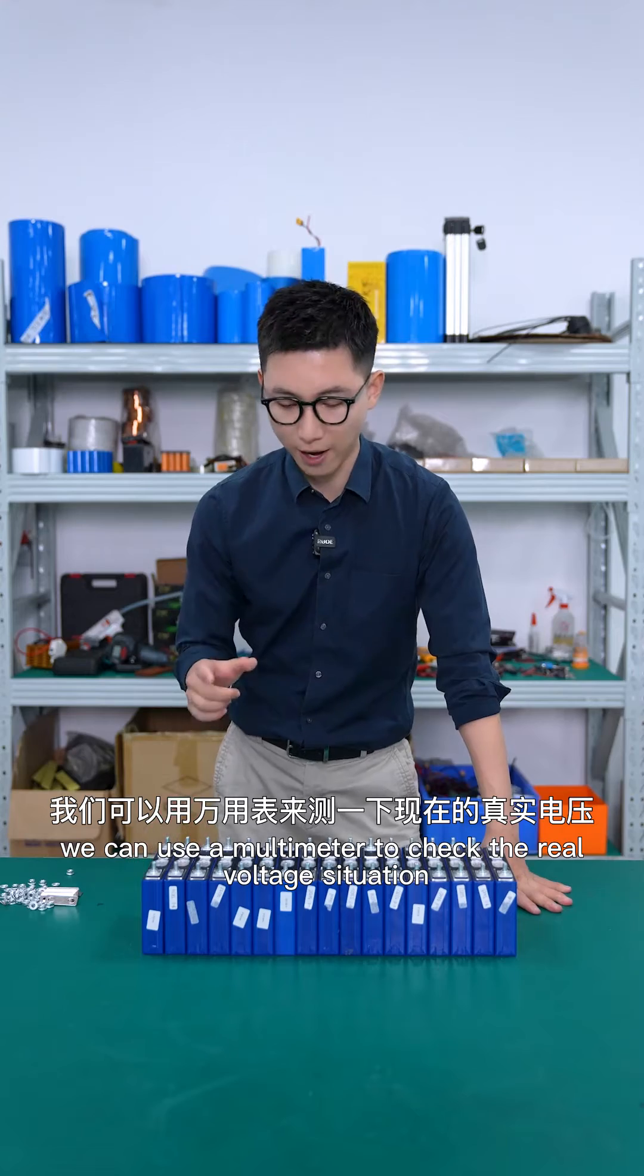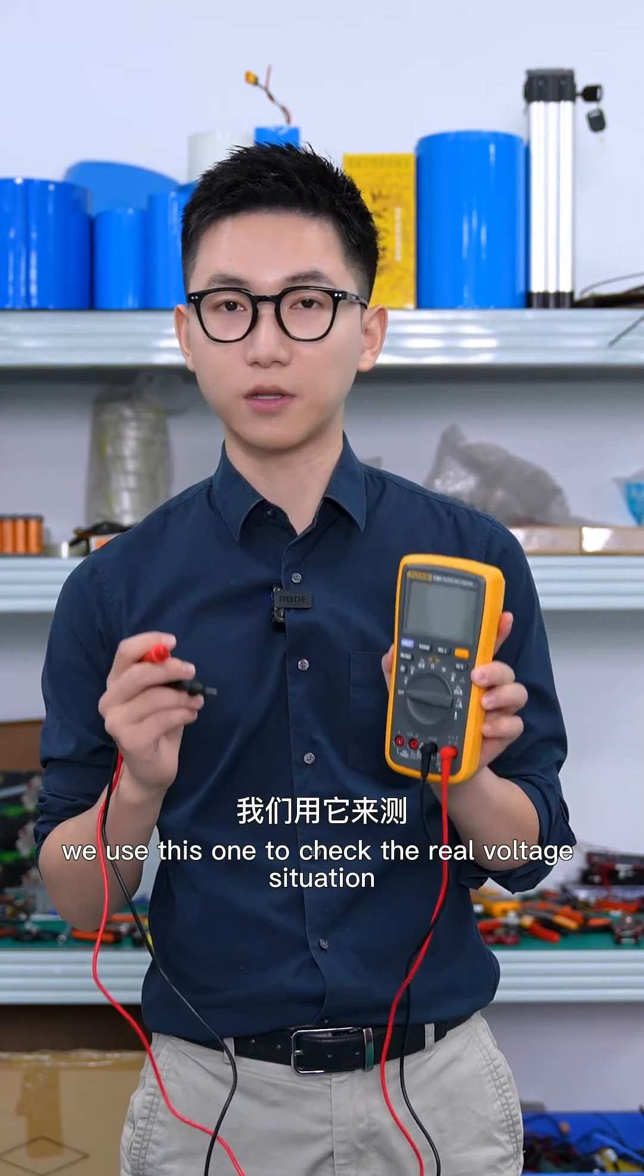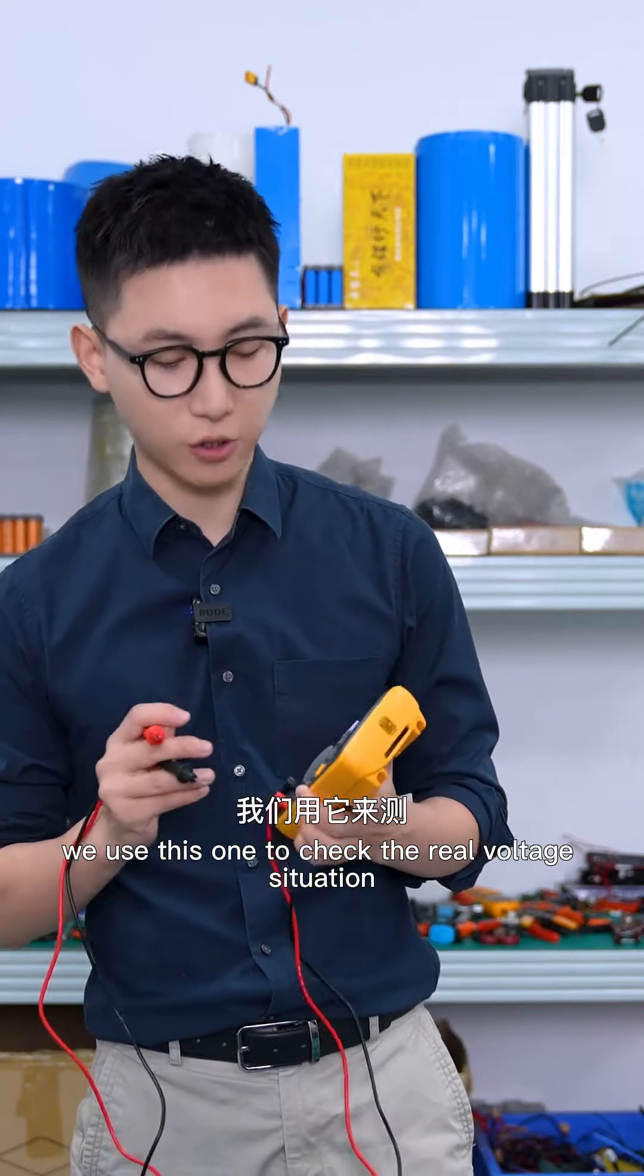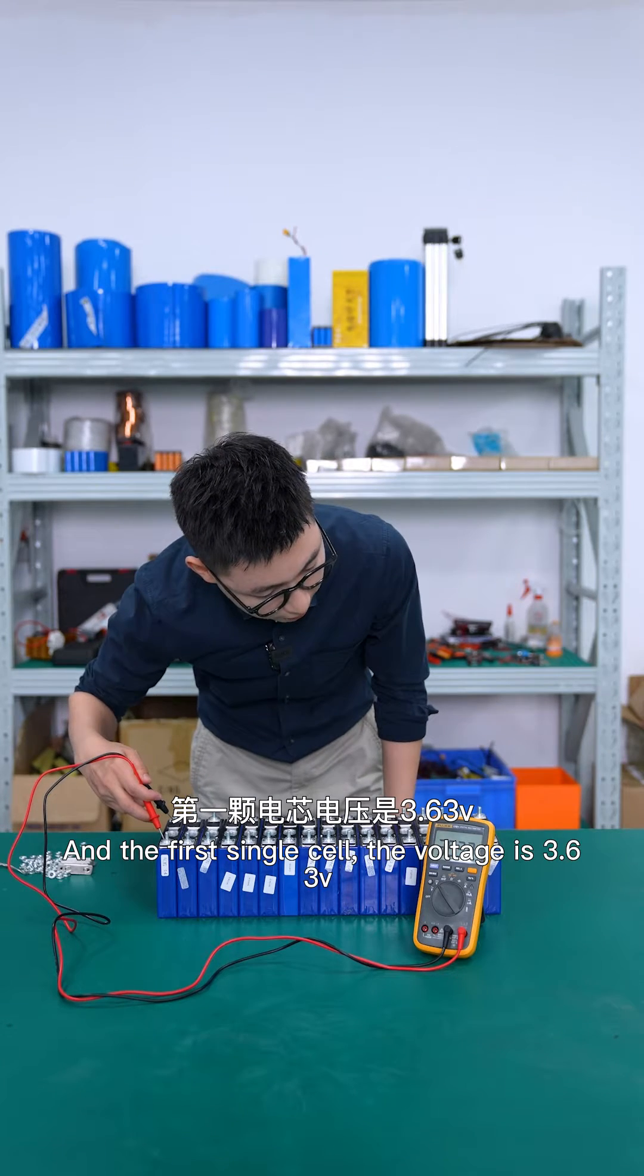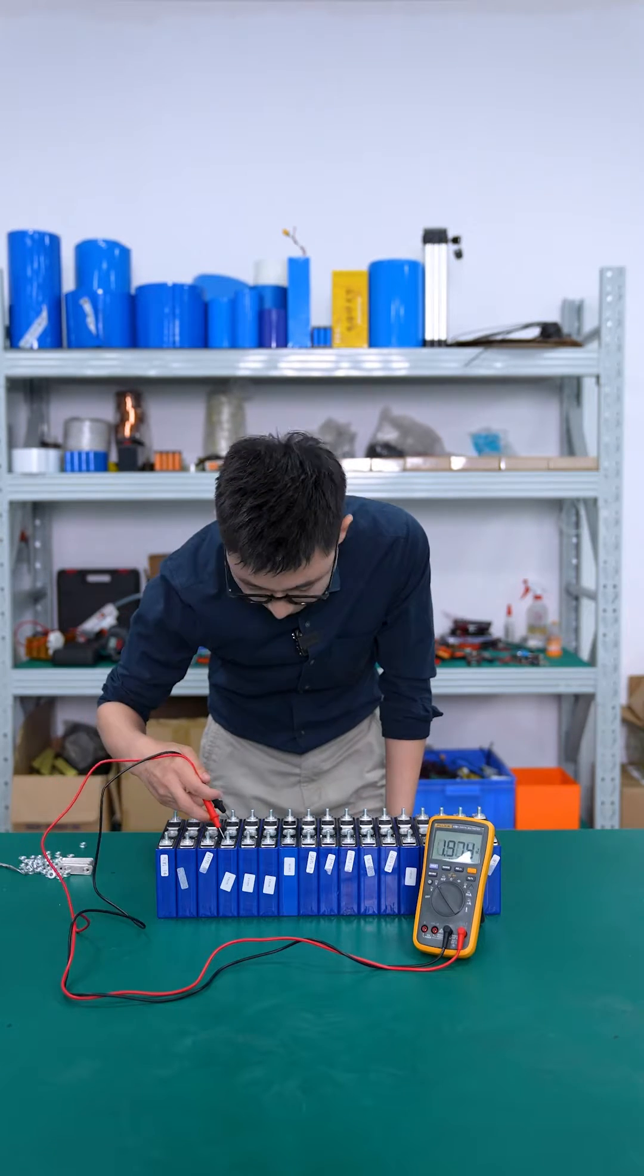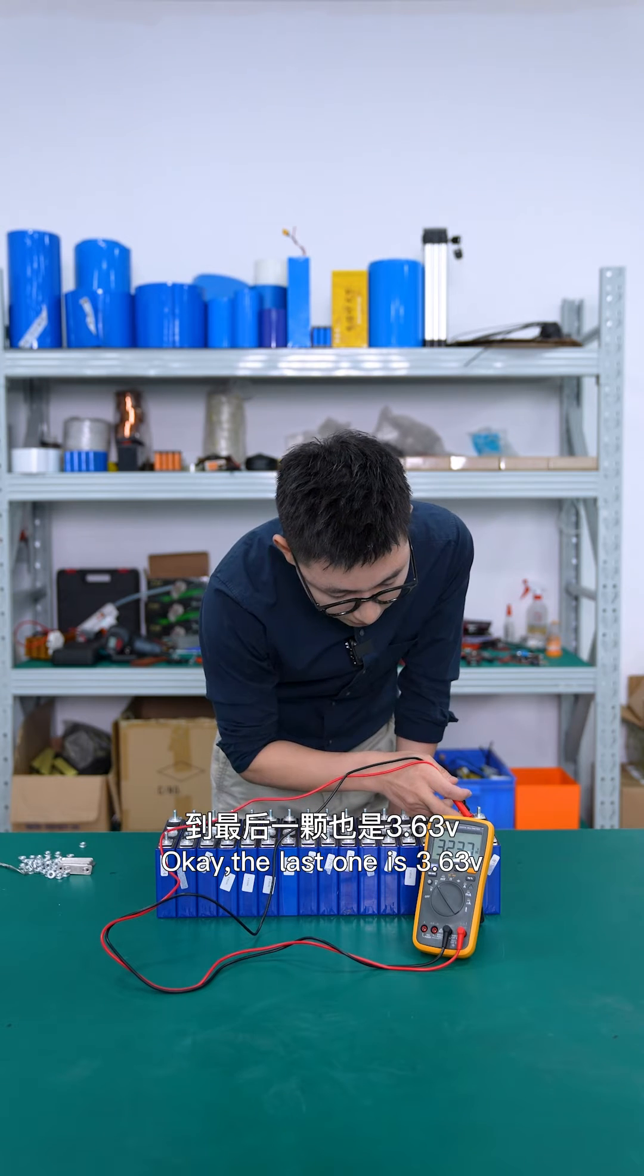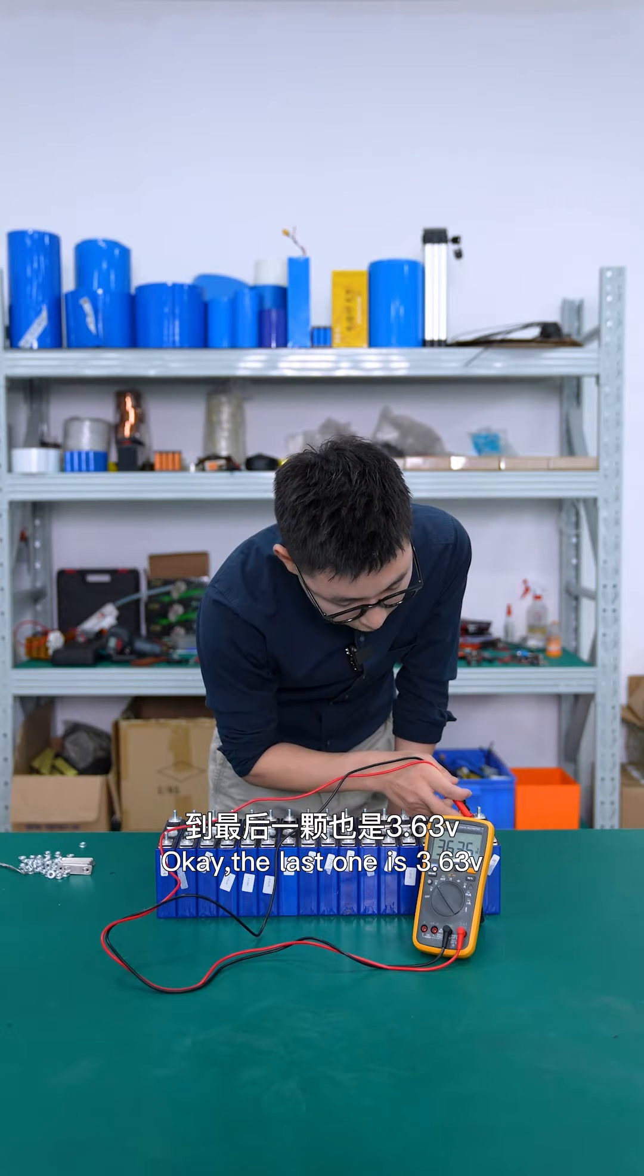Besides, we can use a multimeter to check the real voltage situation. This is a digital multimeter and we use this one to check the real voltage situation. And the first single cell, the voltage is 3.63V. The second one is the same. Okay, the last one is 3.63V. Okay, it's all the same.